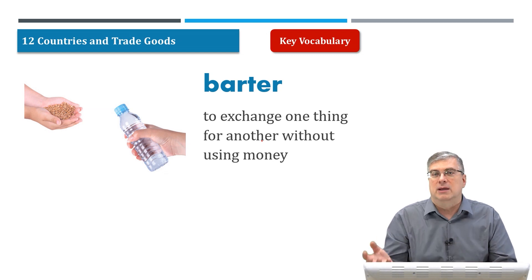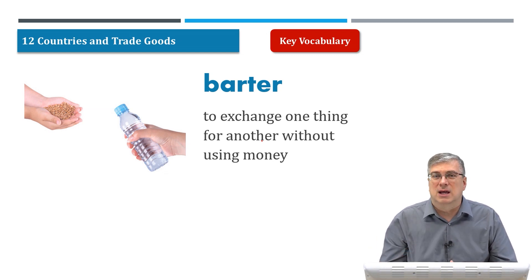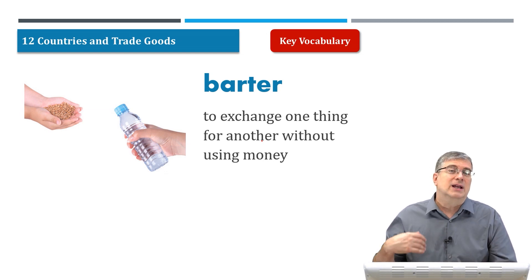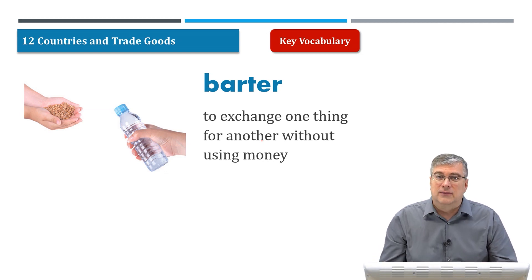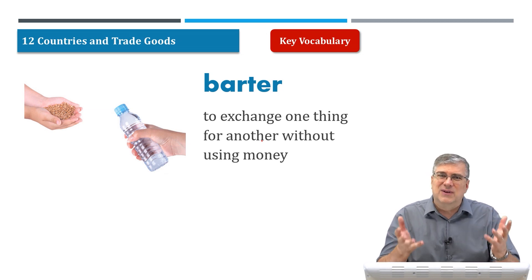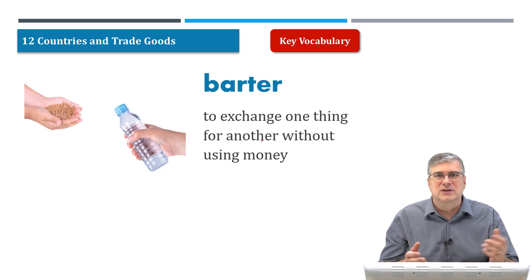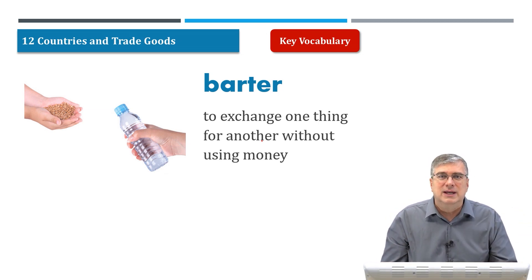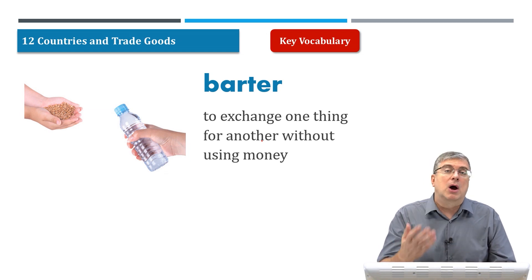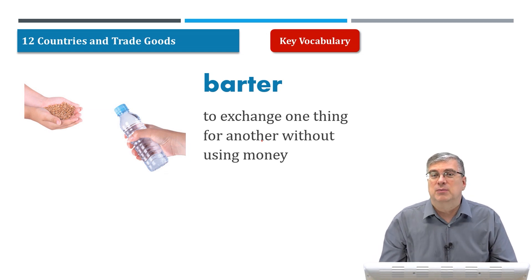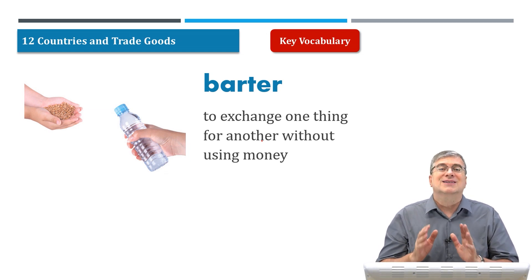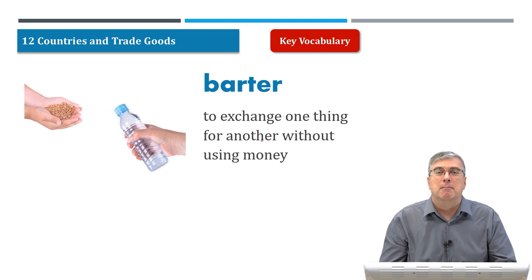A long time ago, before people really depended on money, they just used barter. They would trade a donkey for some wheat, and they would figure out how much the donkey is worth in terms of wheat, and they would barter with each other. So barter is a type of trade, but barter does not use money.